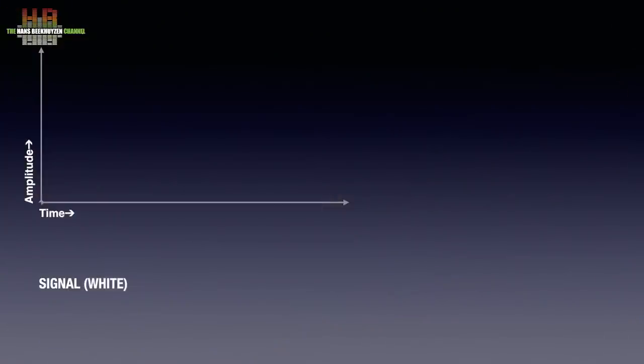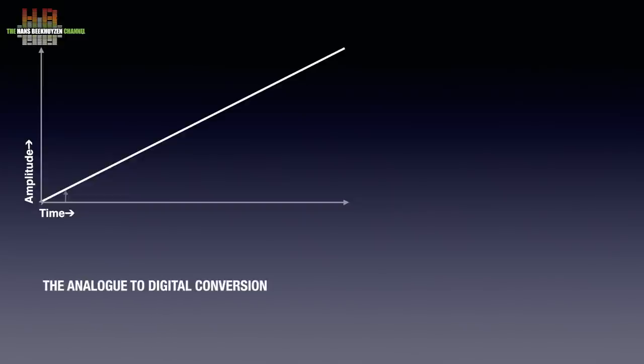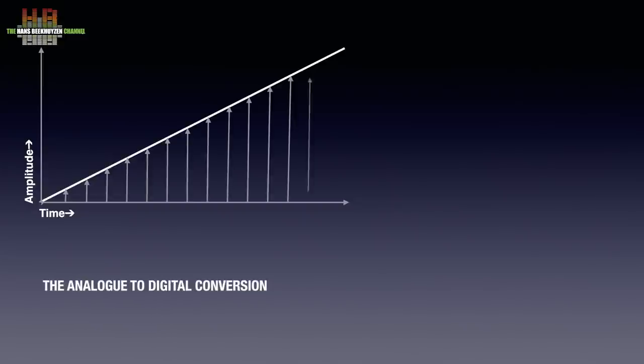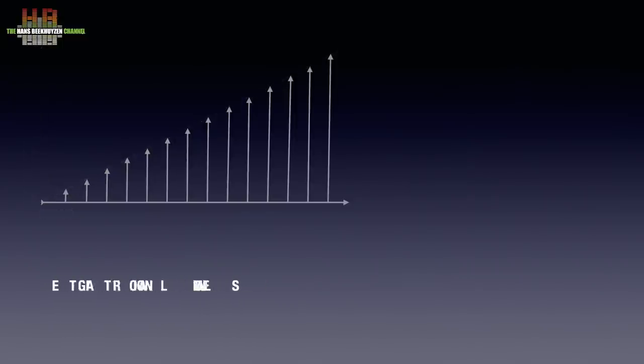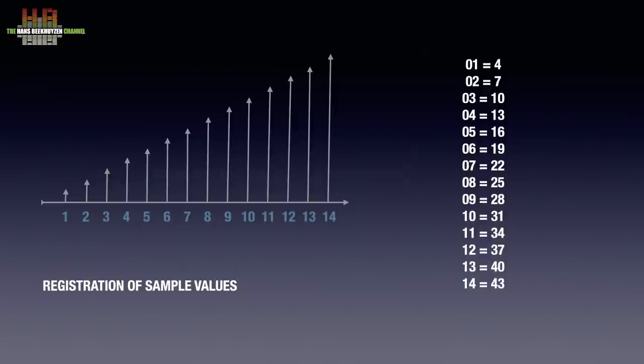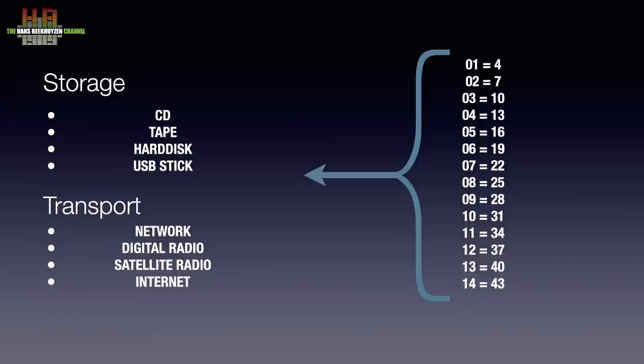A digital to analog converter has a job that is easy to describe: it has to render digital samples in corresponding voltages at precise intervals. Let's imagine a short piece of analog music signal being a straight line. On digitizing, amplitude samples — techspeak for measuring the voltage — are taken at the given sampling frequency, like 44,100 times for CD quality. These measurements are stored in a table and sent to a transport or storage medium like a hard disk, CD, or thumb drive.